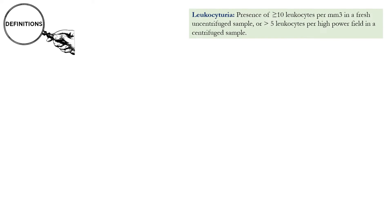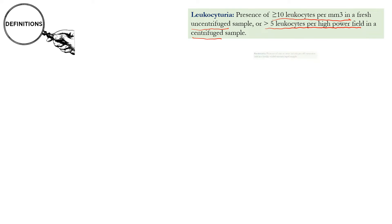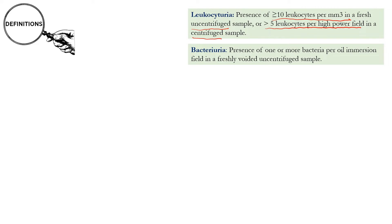Let us review the common definitions which the ISPN has clarified. Leukocyte urea is the presence of more than 10 leukocytes per millimeter cube in an uncentrifuged fresh sample of urine, or more than 5 leukocytes per high power field in a centrifuged urine sample. Bacteriuria means presence of one or more bacteria per oil immersion field in a freshly voided uncentrifuged urinary sample.